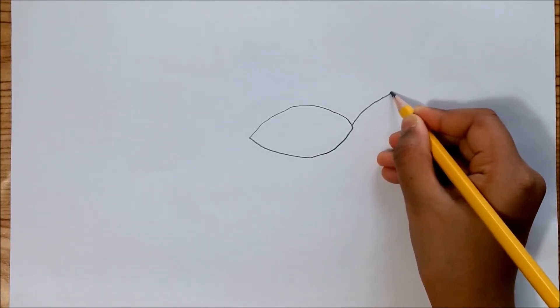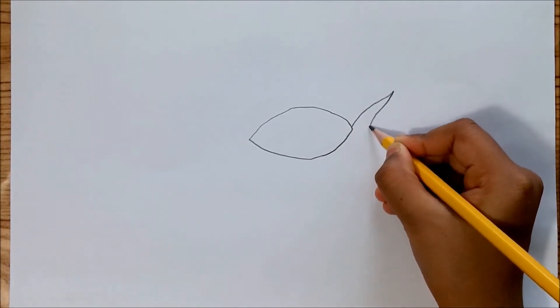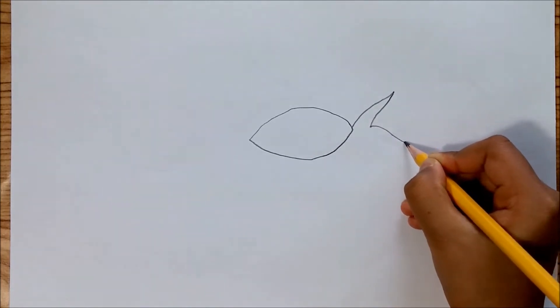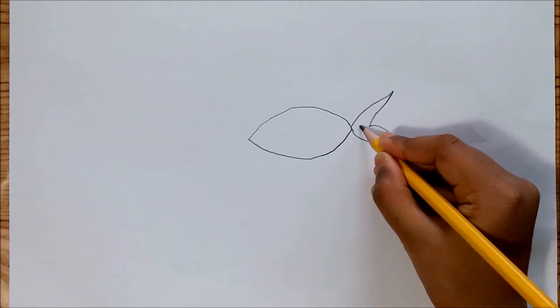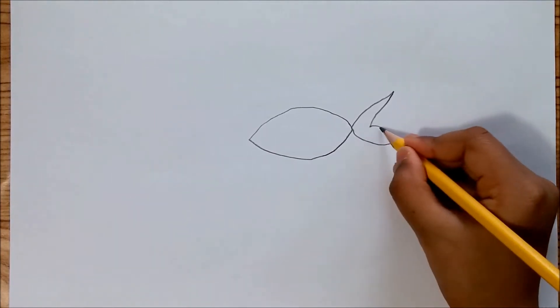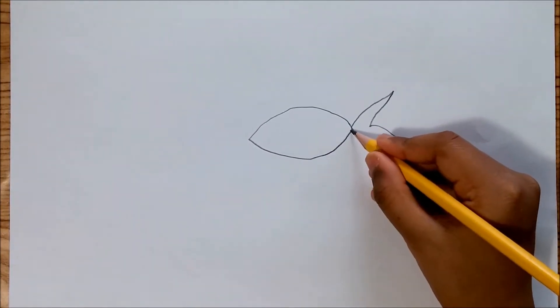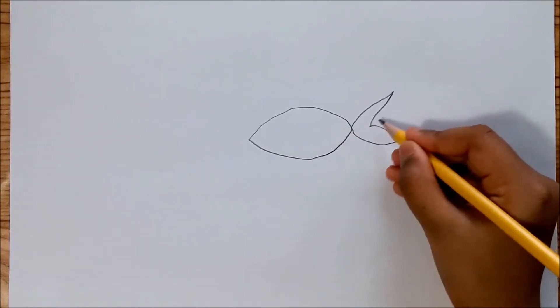Then draw a tail. It's kind of like a thin triangle here, but it doesn't go like that. And another thin triangle there, but it doesn't go like that either. That makes a tail.